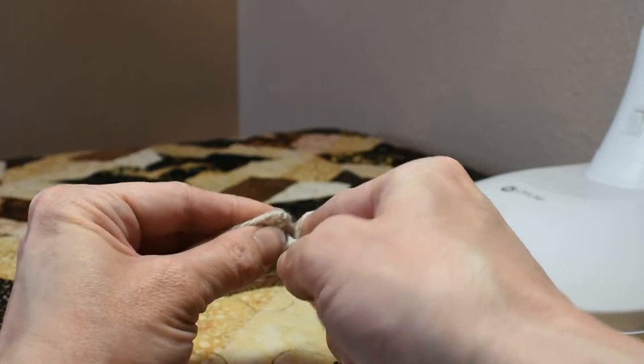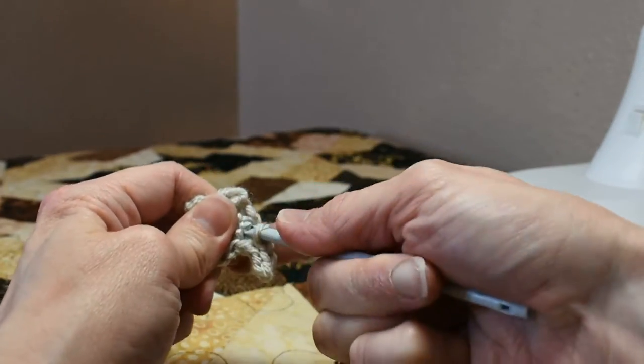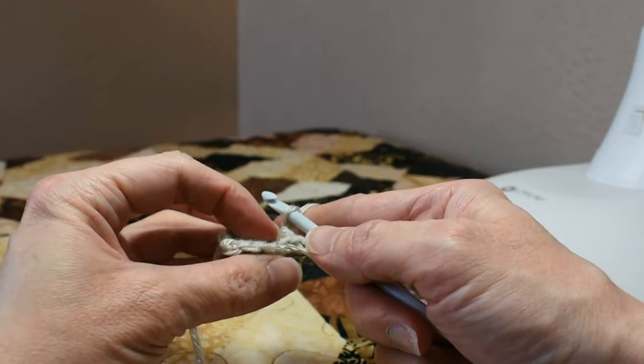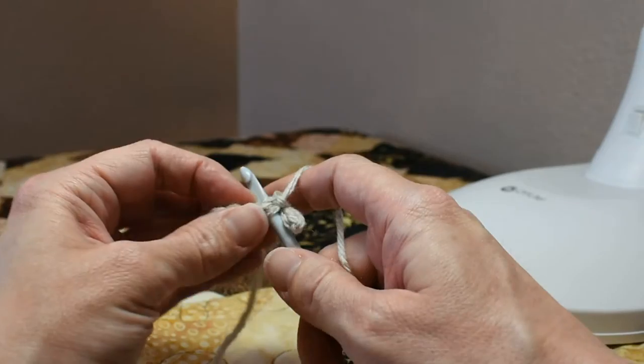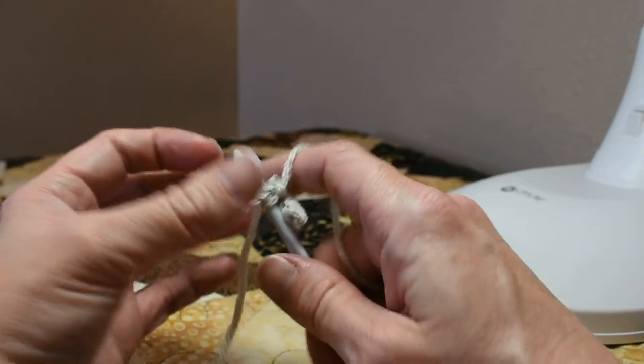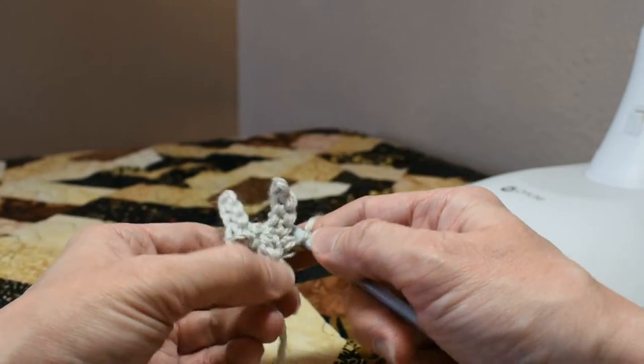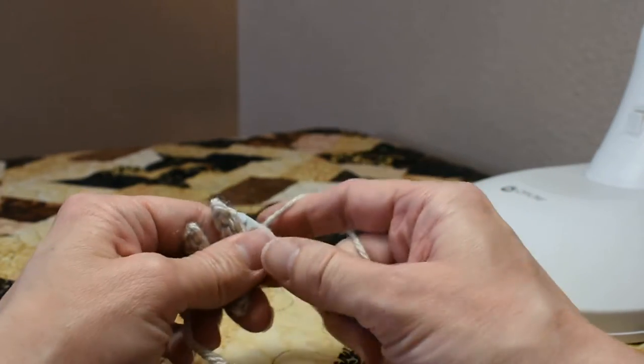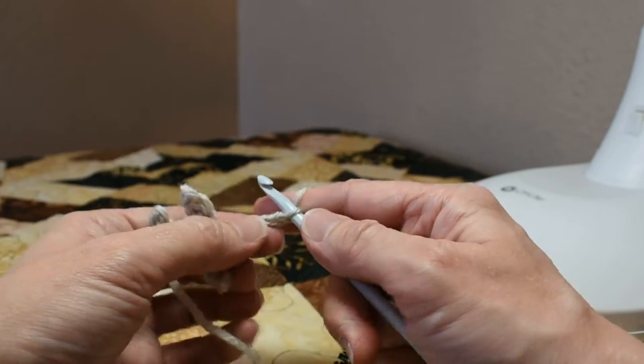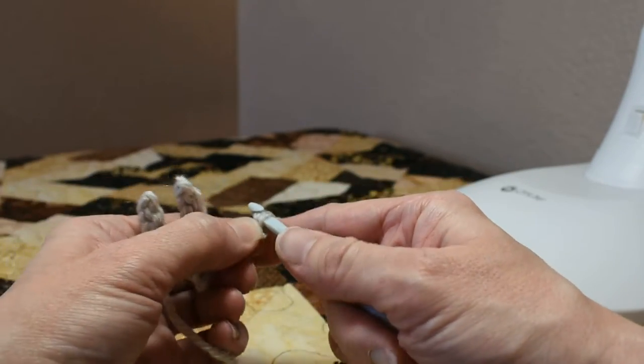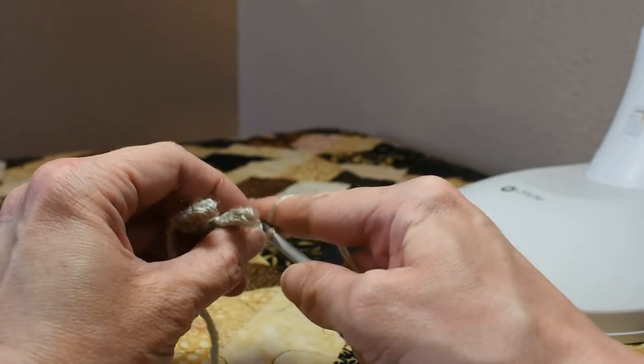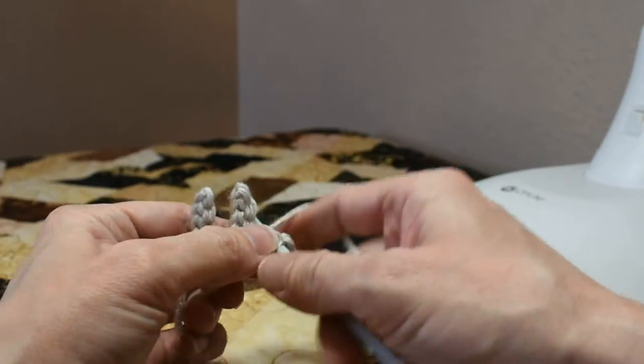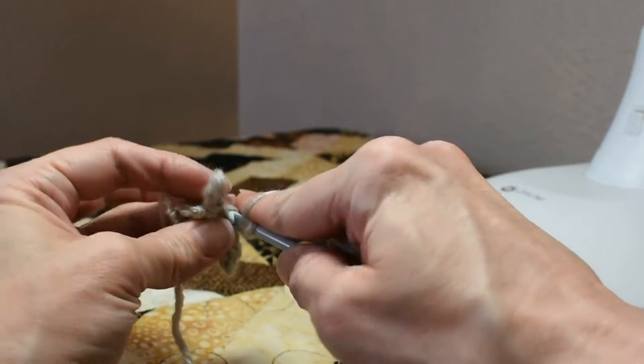We're going to slip stitch between the two front toes. Chain one and with the leeway that this gives you, we're going to bring this over and go back into the single crochet that you made on the opposite side of the toe. Now we're going to single crochet in there. Now as you can see this lines up your front toe with your back toe. Now chain three. Again working in the back bumps of your chain, you're going to slip stitch down the chain you just made. And single crochet in the last single crochet you made.